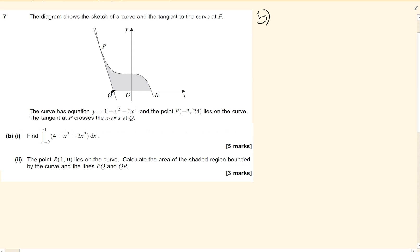Now we're being asked to integrate the function between the limits of 1 and minus 2. Integrating this function gives me 4x, add 1 to the power divided by the new power, so it's going to be x cubed over 3 minus 3x to the 4 over 4.